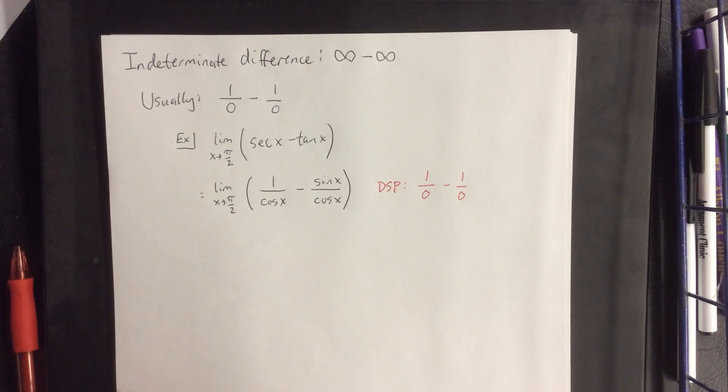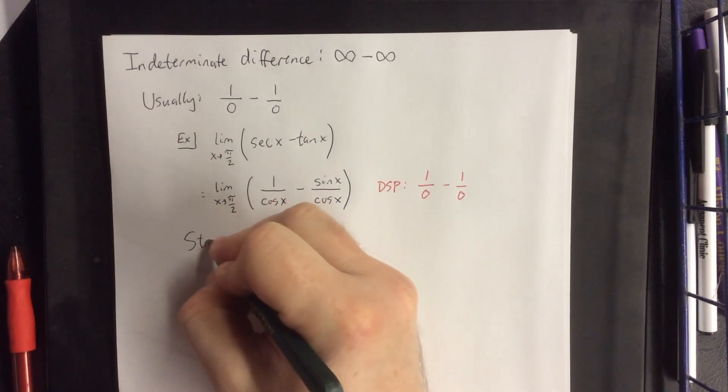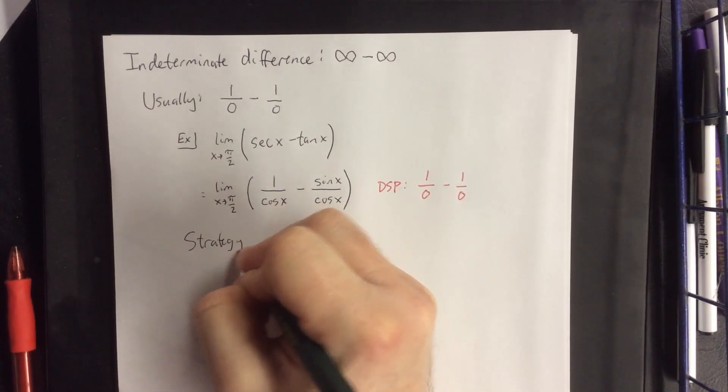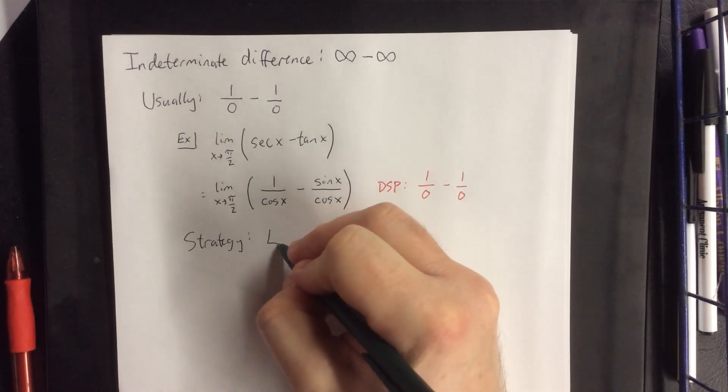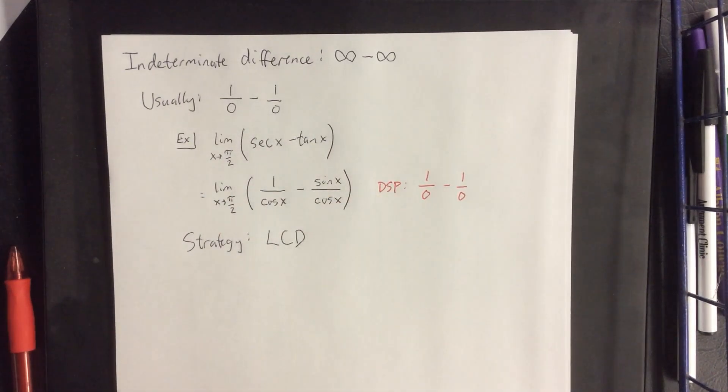Now, the typical strategy for something along these lines is to establish a common denominator for them. Anytime you have a fraction minus another fraction, we can turn it into a single fraction where we can use L'Hopital's rule by establishing that lowest common denominator.